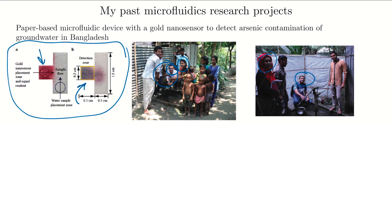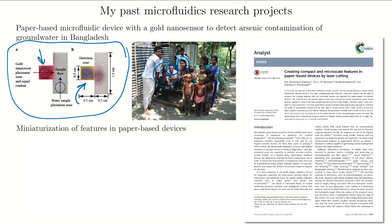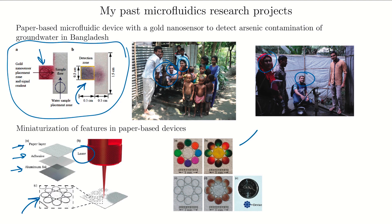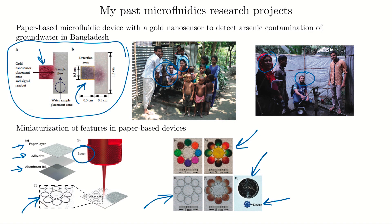We also looked at miniaturizing features in paper-based devices using a laser. I'm showing the laser cutting these patterns into a layered device — paper over adhesive over an aluminum foil substrate. The laser cuts through the paper layer but not the aluminum foil substrate, allowing us to make very small channel features. We used different dyes, and in one version used a glucose test — trying to use a very small sample volume but run many different tests. Compared to a Canadian nickel for scale, you can see just how small these paper-based devices are.